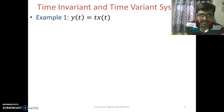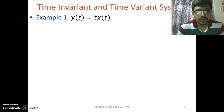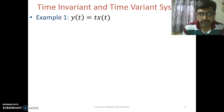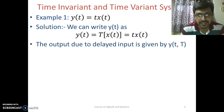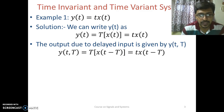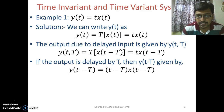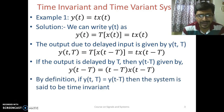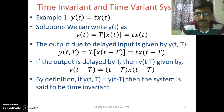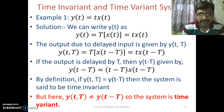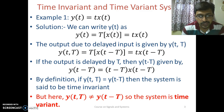Let us illustrate this with the following example: y(t) = t·x(t). First we delay the input signal and find the output due to the delayed input. So y(t, T) = t·x(t − T). Now if we delay the output by T seconds, y(t − T) = (t − T)·x(t − T). By definition, if y(t, T) equals y(t − T) then the system is time invariant. But here output due to delayed input is not equal to the delayed output, so the system is time variant.